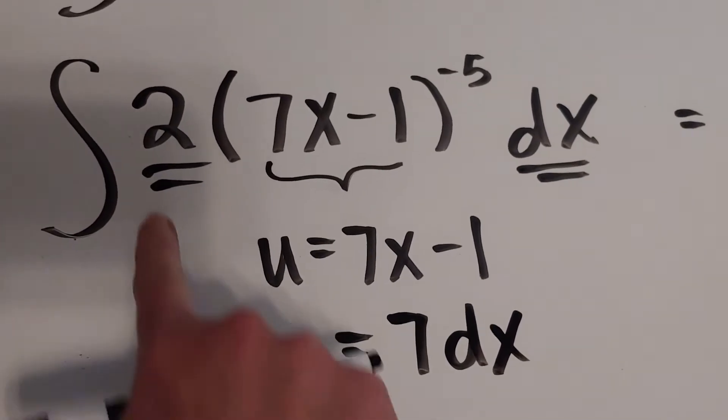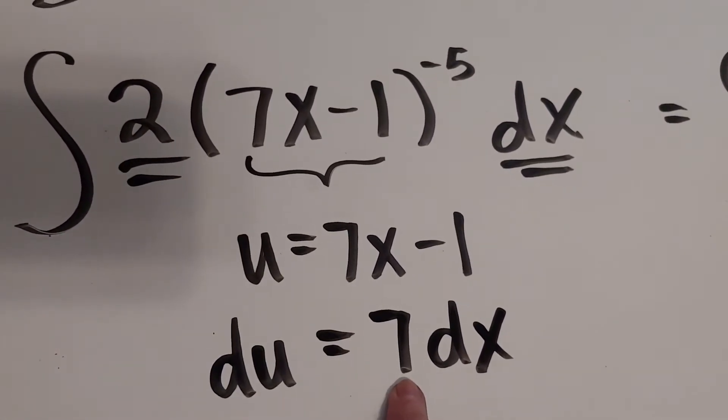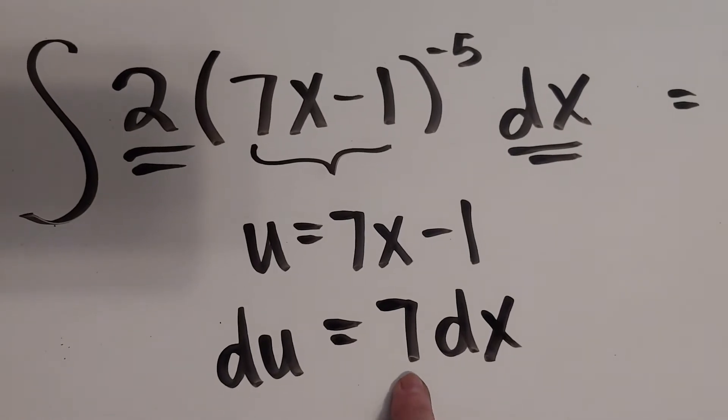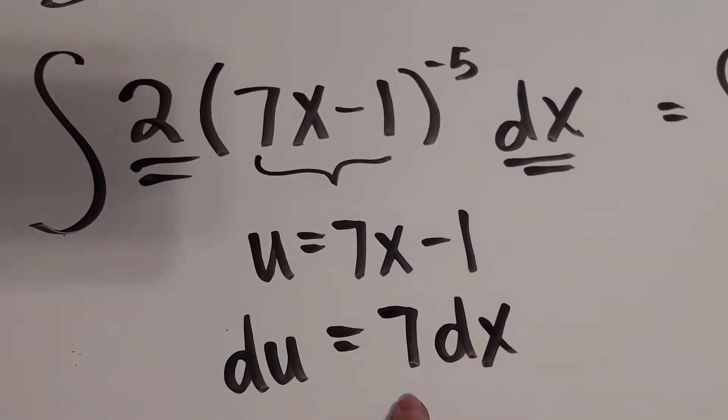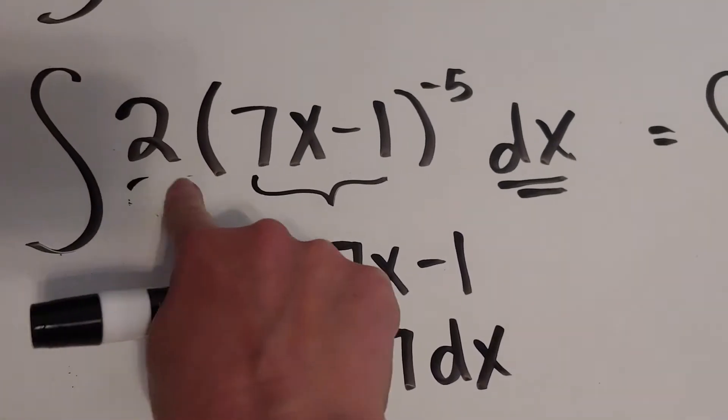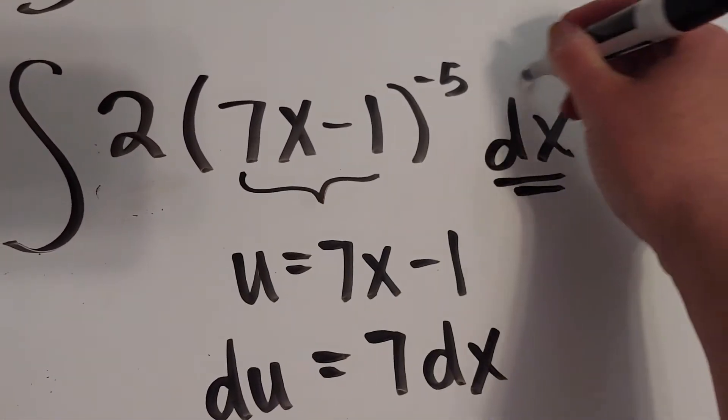I got a problem. I can't really make my 2 and my 7 match. So when you have this happen where your coefficients are not going to match at all, what we're going to do is we're just going to worry about trading the dx.